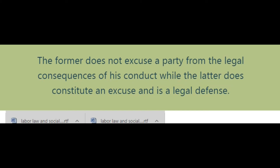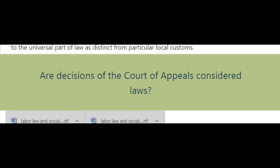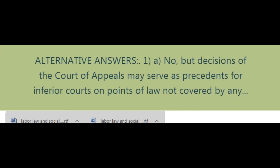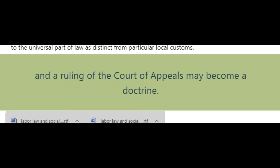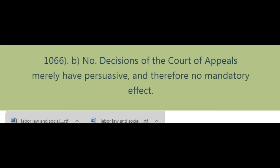Inferior courts' decisions, 1994: Are decisions of the Court of Appeals considered law? Alternative answers: (1) No, but decisions of the Court of Appeals may serve as precedents for inferior courts on points of law not covered by any Supreme Court decision, and a ruling of the Court of Appeals may become a doctrine (Miranda v. Imperial, 77 Phil. 1066).